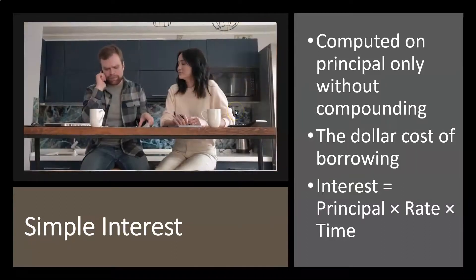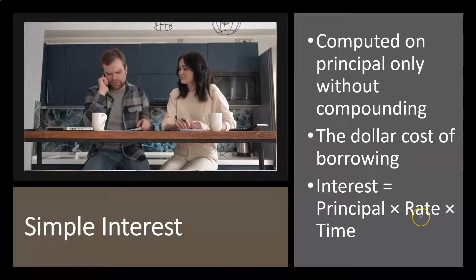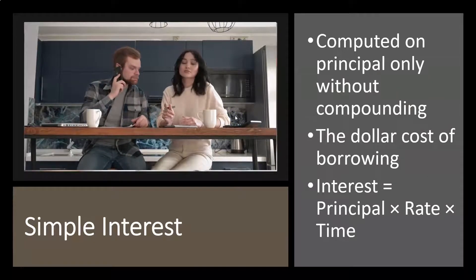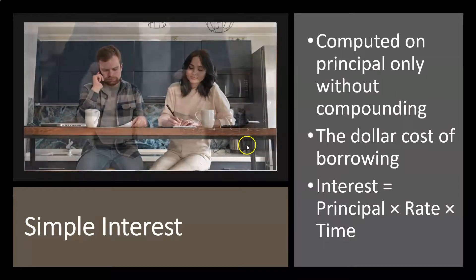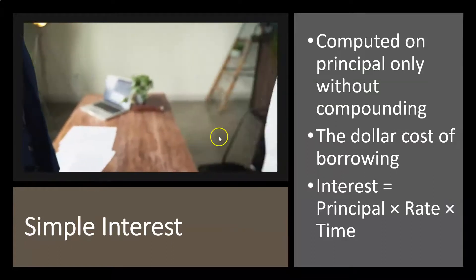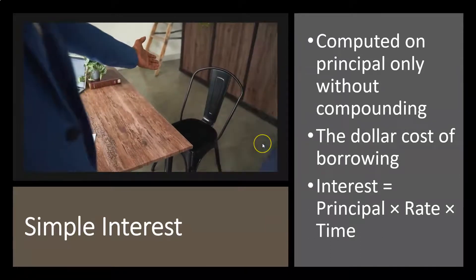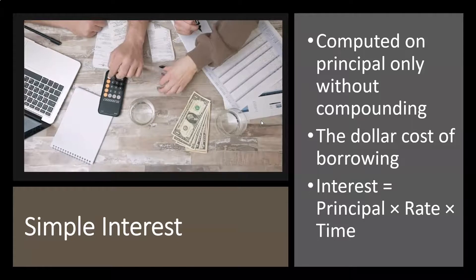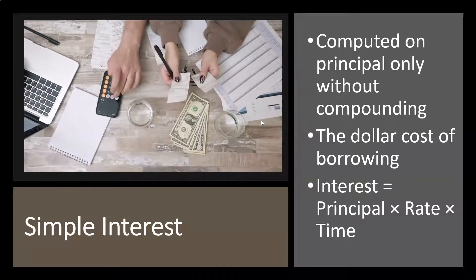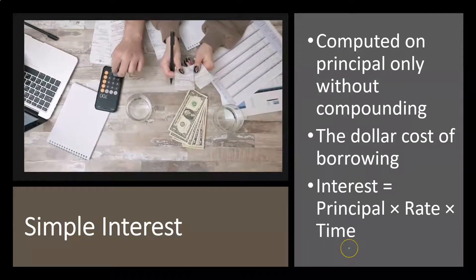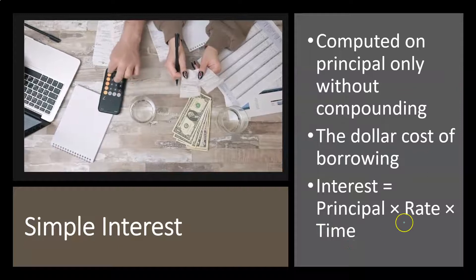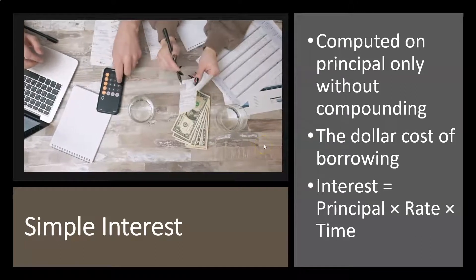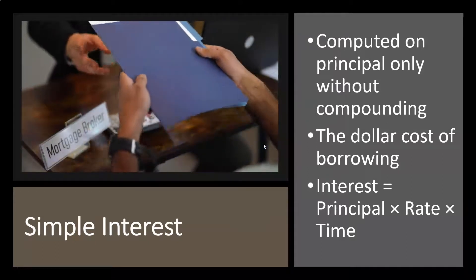If you want to break this down to a monthly basis, you need to make sure the rate and timeframe match. For example, with a 12% yearly rate divided by 12, you get a monthly rate of 1%. That 1% times a $1,000 principal equals $10 per month. If the loan runs for five months, times five, we get a simple interest calculation of $50 over the five-month timeframe.